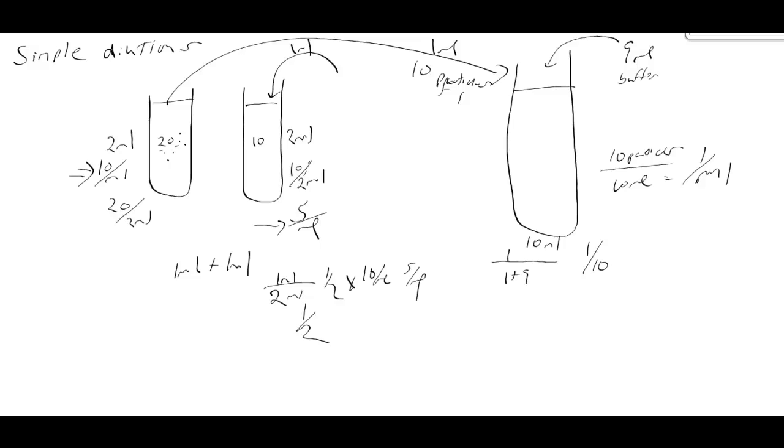So if we started with 10 per mil multiplied by the dilution, then we wind up with the resulting concentration of 1 particle per mil.